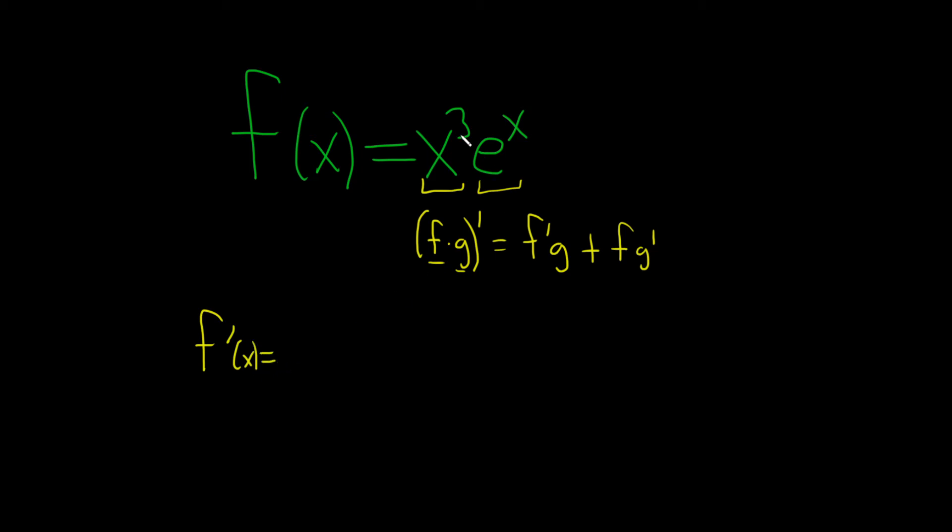Taking the derivative of the first, that's the derivative of x cubed, we'll use the power rule. We'll bring down the 3, so we get 3x squared times the second, e to the x, plus the first, which is x cubed, times the derivative of the second, which is just e to the x.